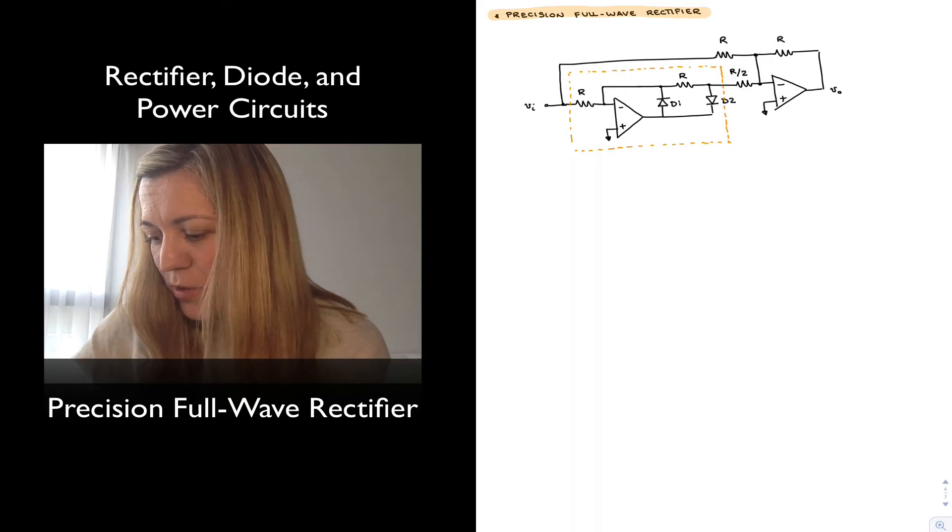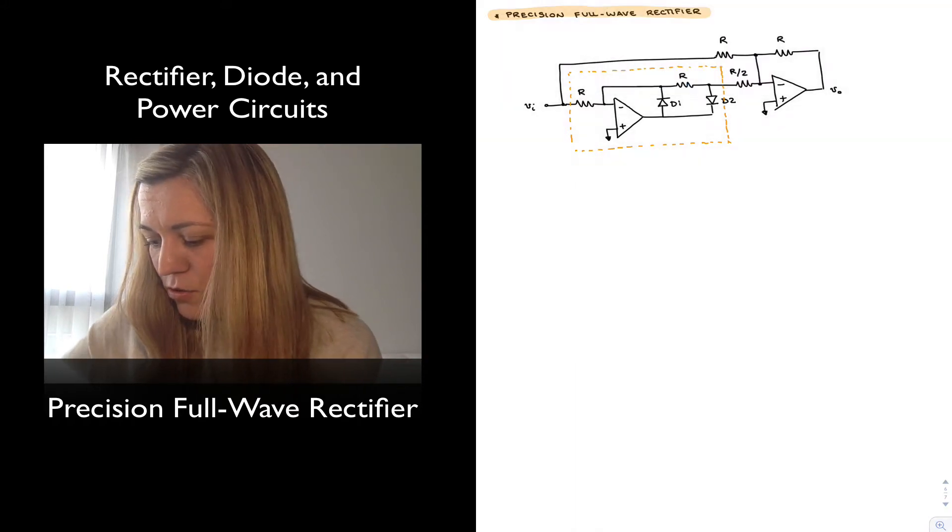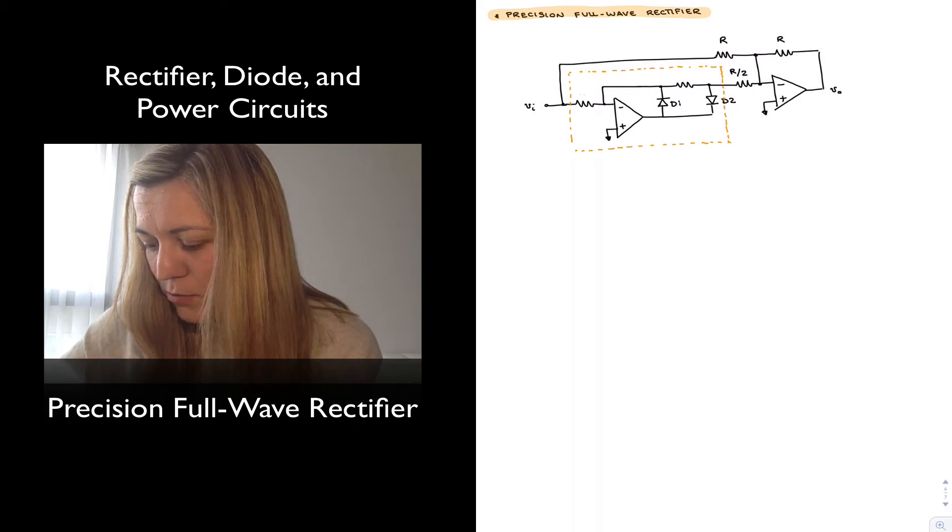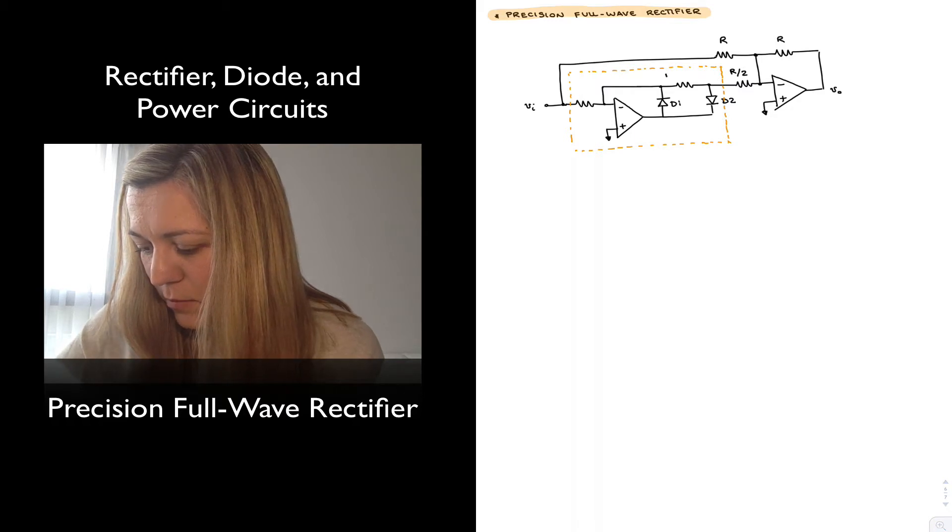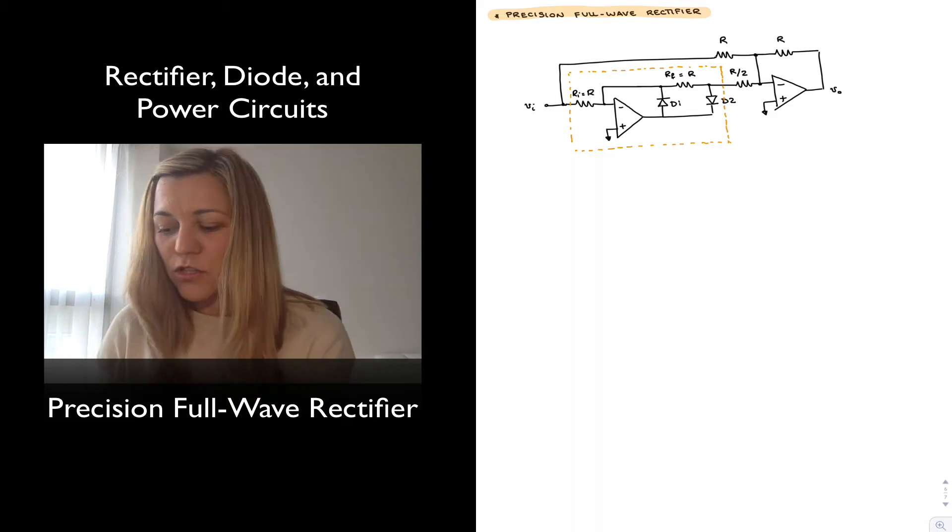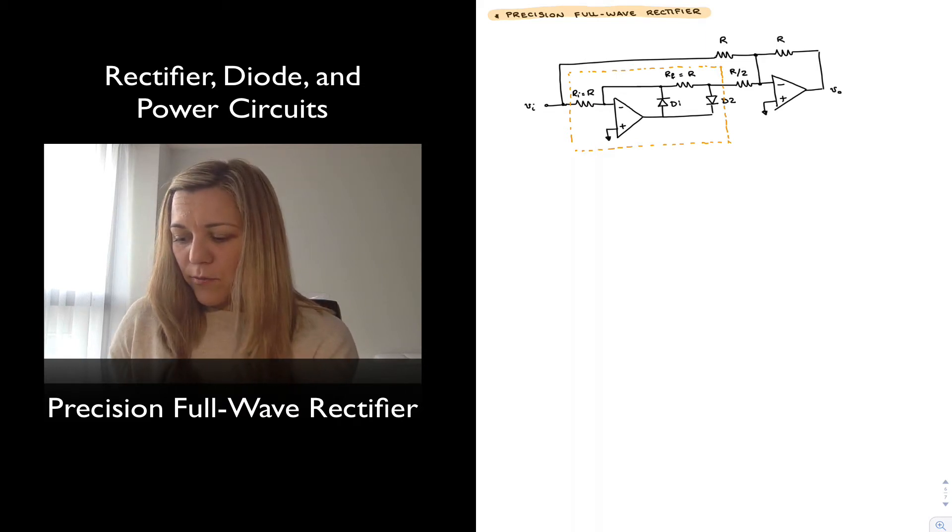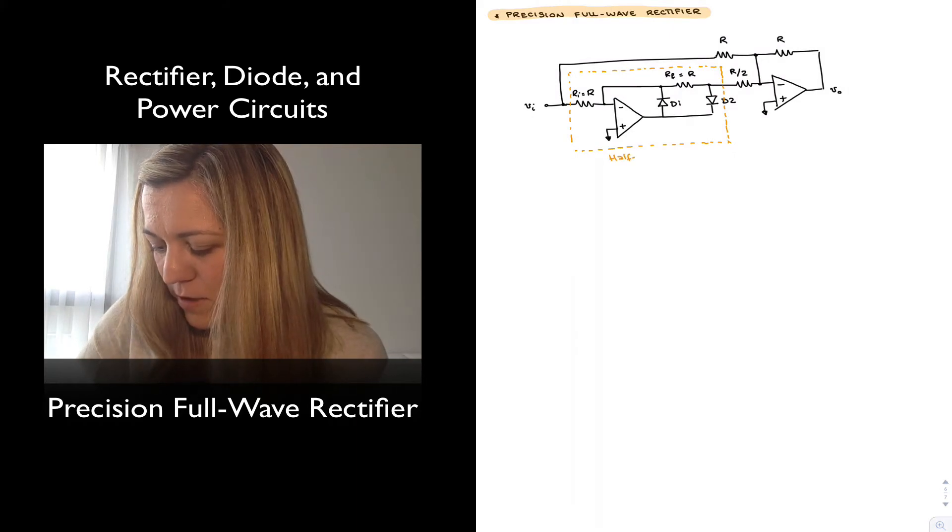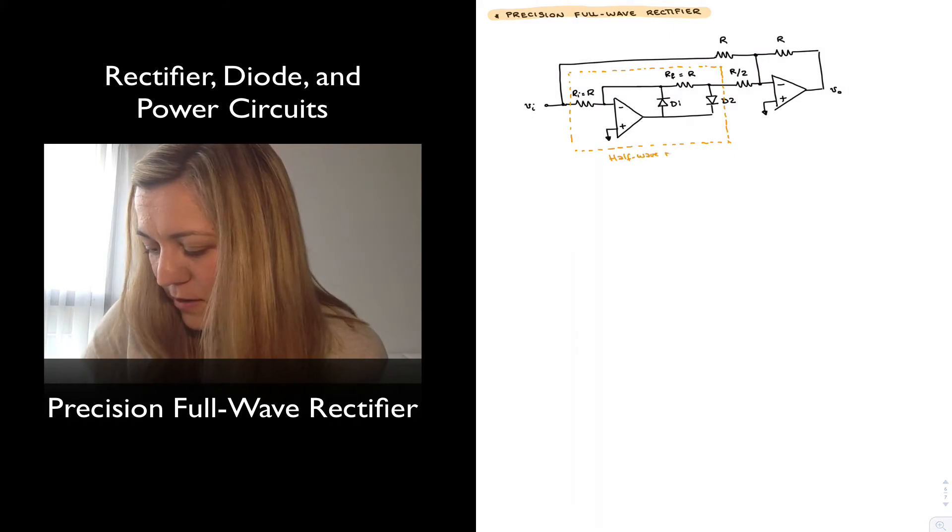In that case, we had labeled this resistor RF and this resistor RI. So perhaps we can add those labels just so that we can see it's the same exact circuit. In this case, both RF and RI are just equal to each other and equal to some value R. So this would be our half wave rectifier.